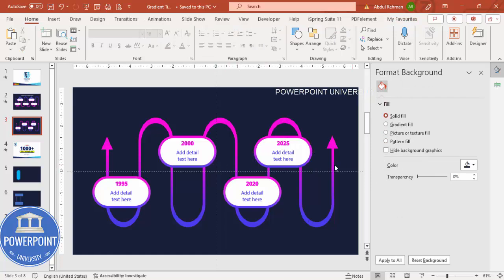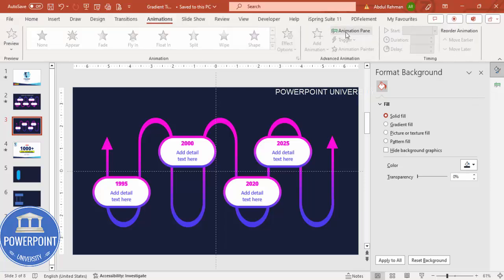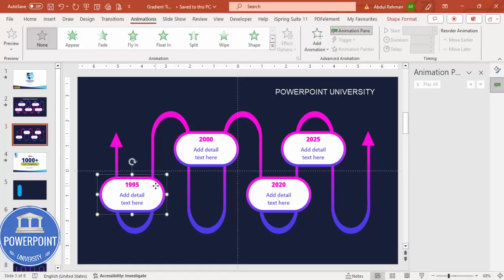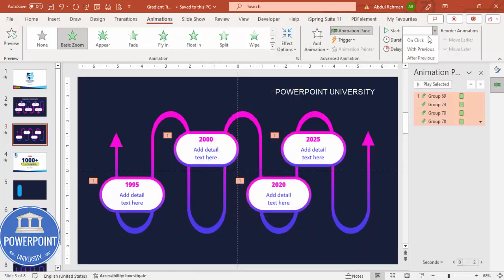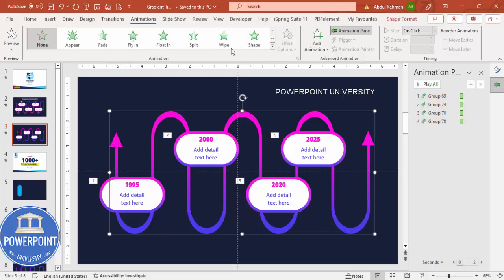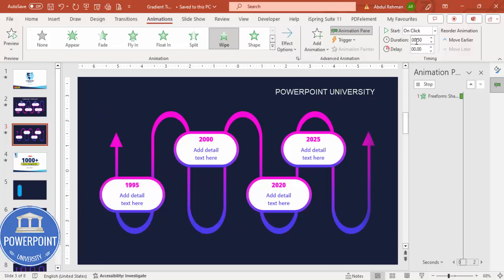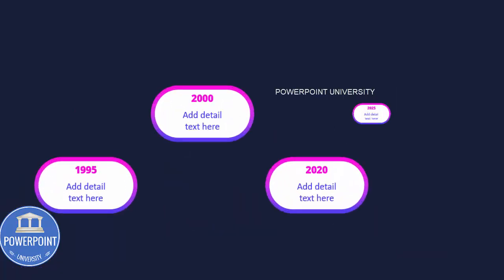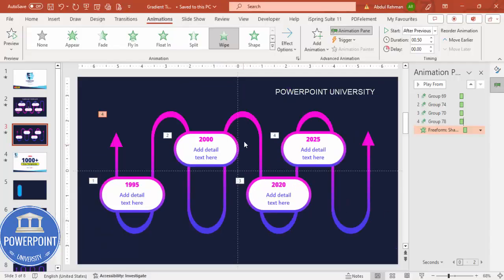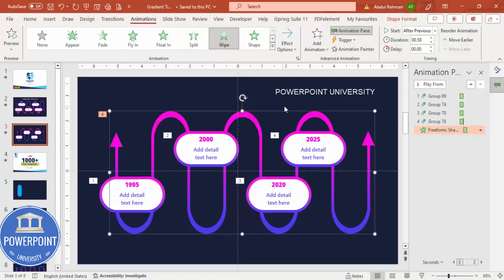To add animations, open the Animation Pane. Select the card groups while holding Shift, then go to Add Animation > More Intense Effects > Basic Zoom, click OK — set to On Click. For the curved timeline shape, add a Wipe animation starting from the left, set to After Previous. When you play the slide, the timeline wipes in first, then each option card appears one by one on click. You can increase or decrease the number of curved lines depending on your requirement.